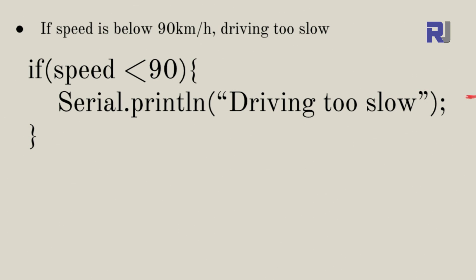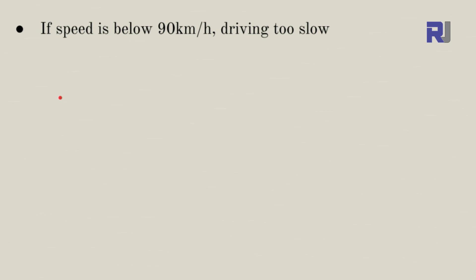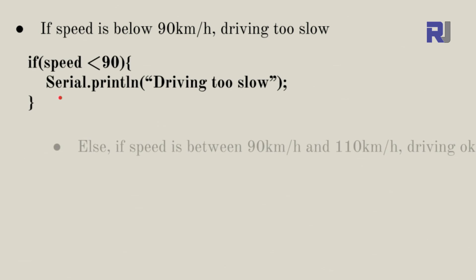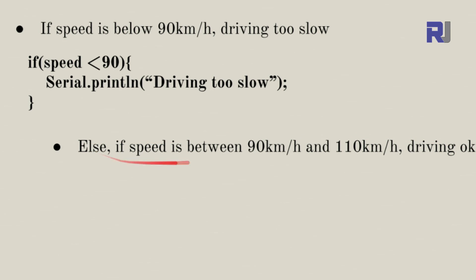This action could be sending an email or triggering something else, but in this case we are just printing it on the screen. Now for the else-if: if speed is between 90 and 110 km/h, the action is 'driving okay.' Let's implement this in code.